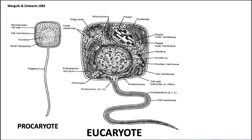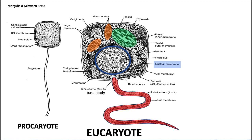On the left is a prokaryote — very small — and a eukaryotic cell in the center is very big. The main feature of eukaryotes is that they have a nuclear membrane, shown in blue. But that's not what Lynn was talking about. She was talking about the mitochondria, the plastid or chloroplast, and the red basal body and the undulopodium. She was concerned about the origin of these structures. She thought the mitochondria came from free-living bacteria in the alpha proteobacteria family, the plastid came from cyanobacteria, and maybe the flagella or undulopodium was a free-living spirochete before it started pushing things around.